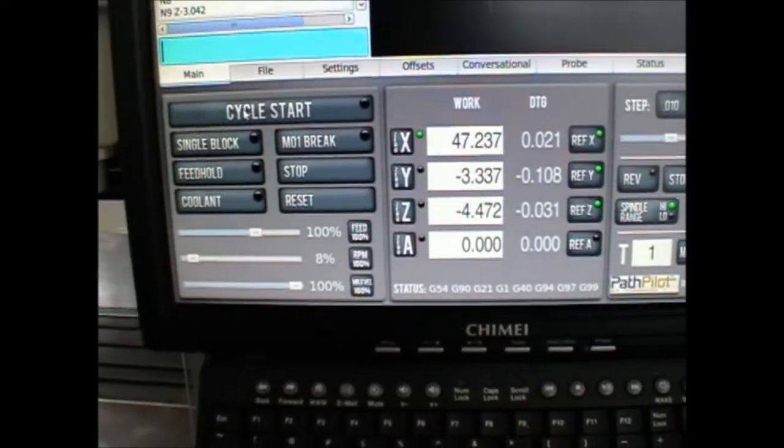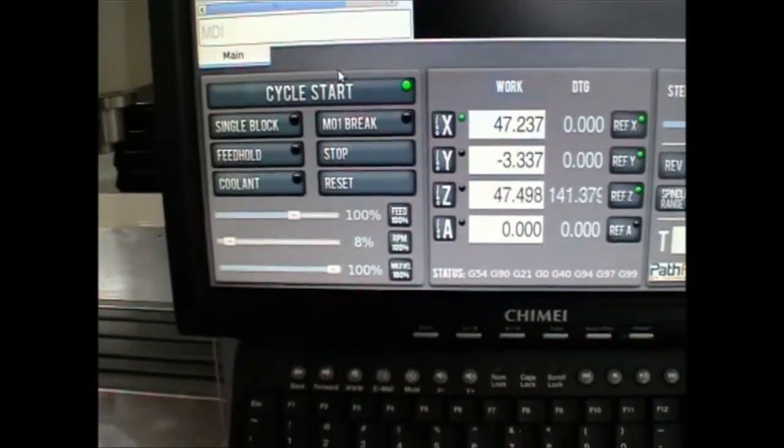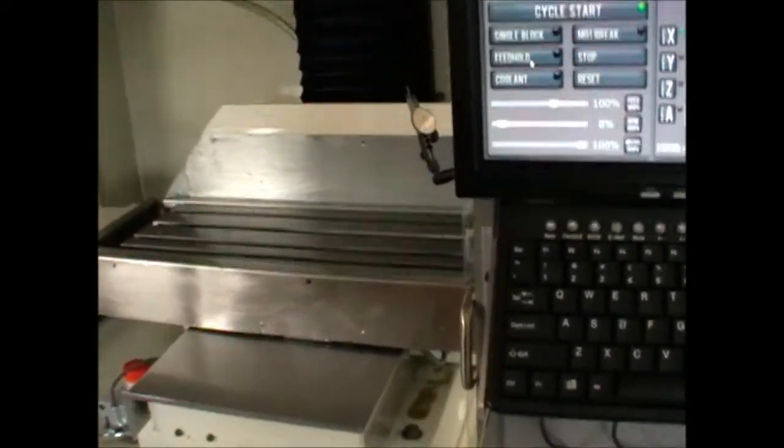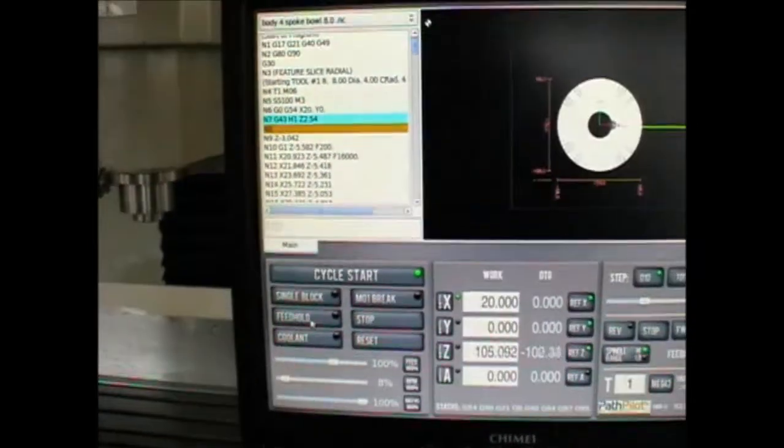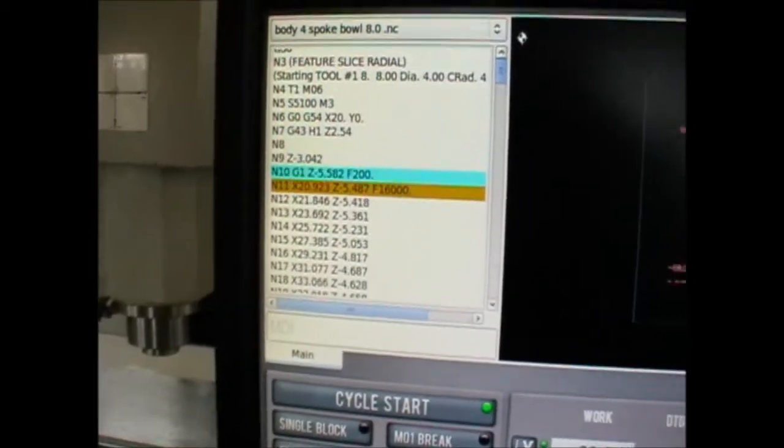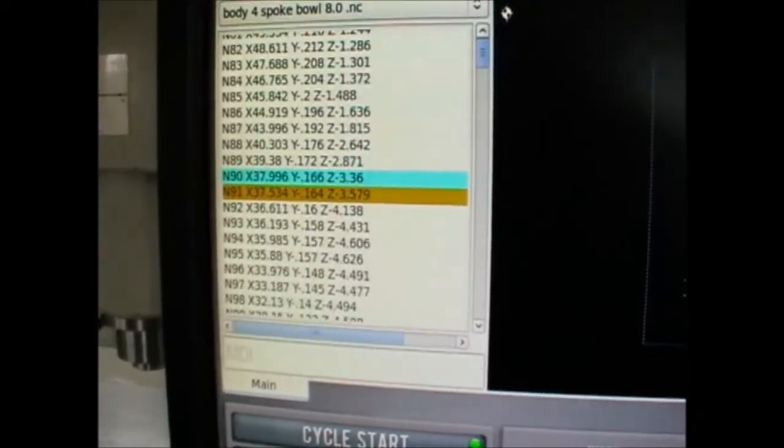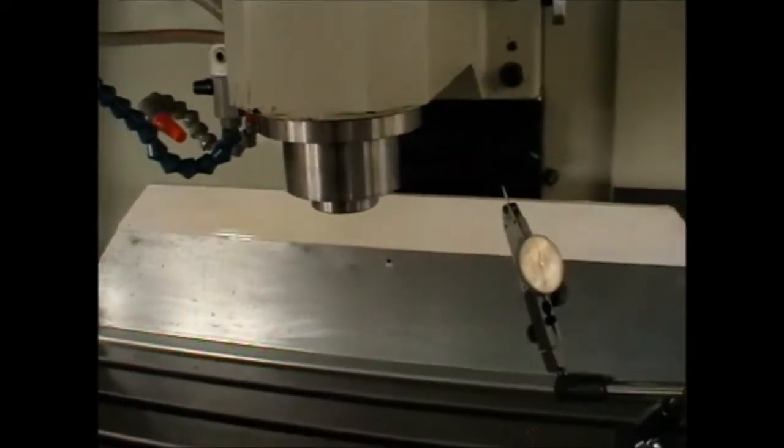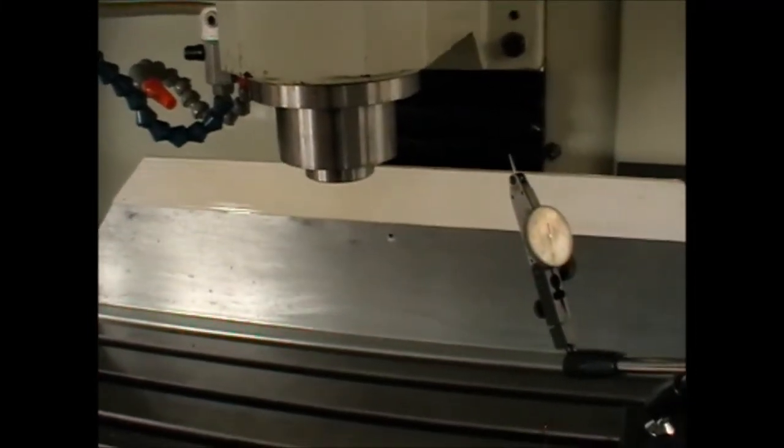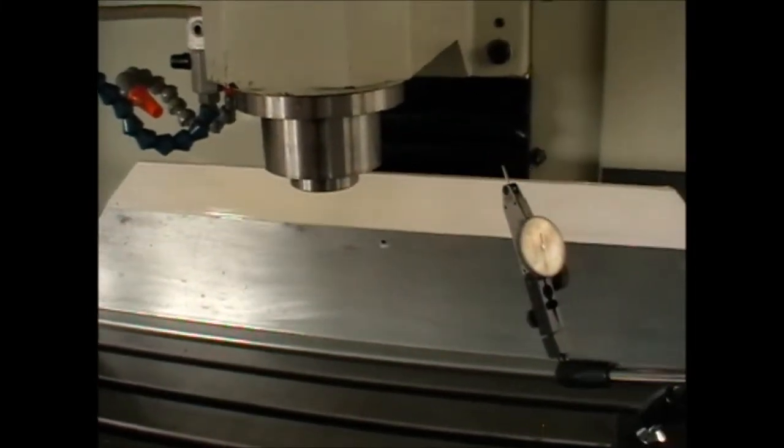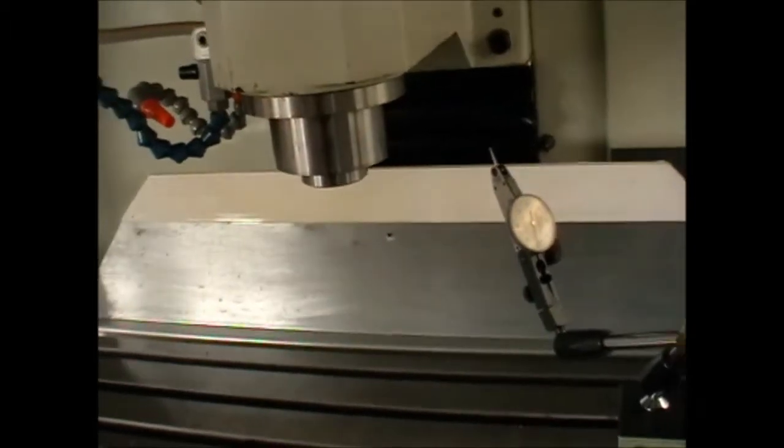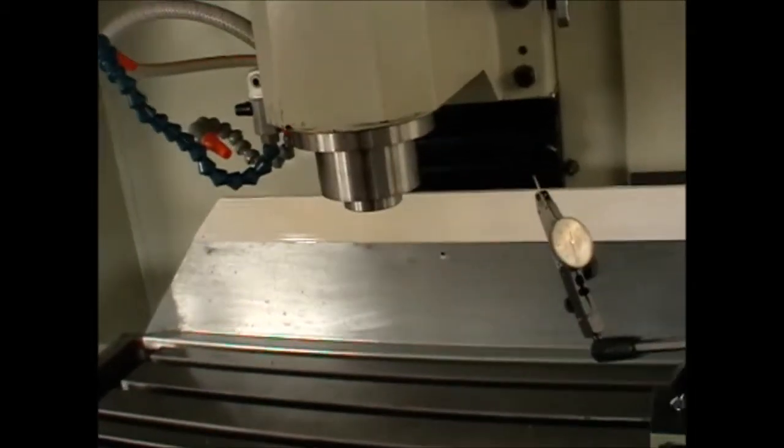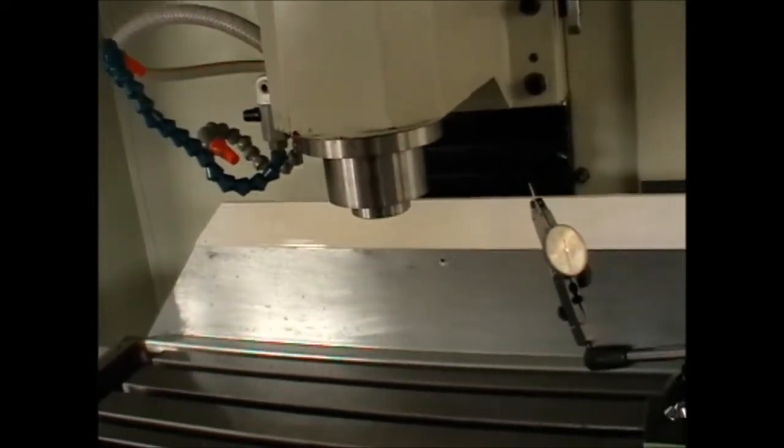Okay, so let's just run this cycle. Just have a look at how quickly this 3D program is processing. You'd think at that sort of speed, if it was going to lose steps, or if the software or steppers couldn't manage it, this is where it would show up.